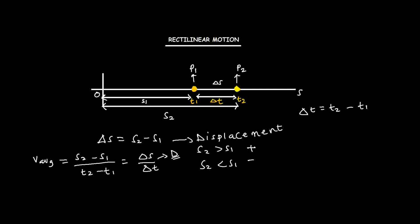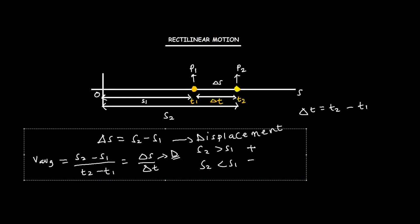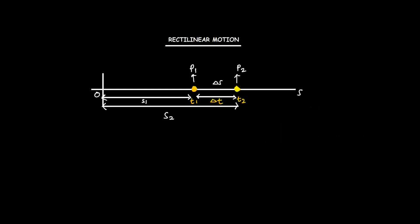Average velocity equals displacement over change in time, and that is equal to s2 minus s1 over t2 minus t1. So that's the formula for average velocity.